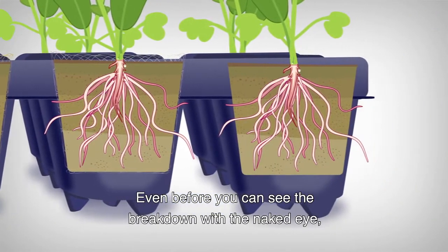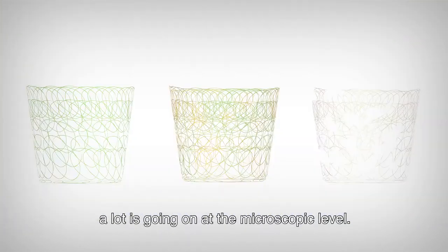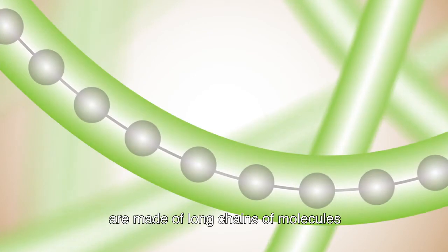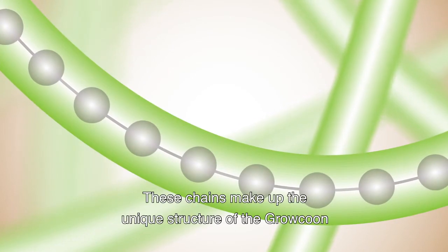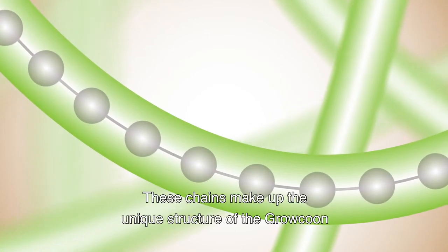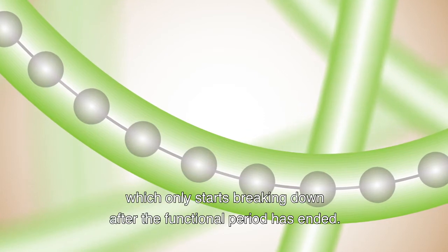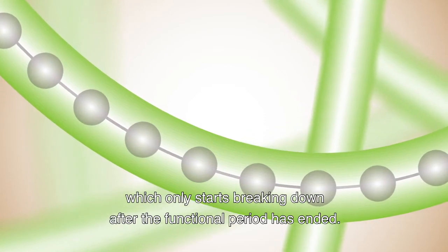Even before you can see the breakdown with the naked eye, a lot is going on at the microscopic level. On a microscopic scale, the fibers of the GroKoon are made of long chains of molecules. These chains make up the unique structure of the GroKoon, which only starts breaking down after the functional period has ended.